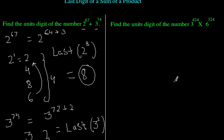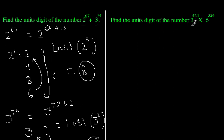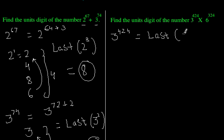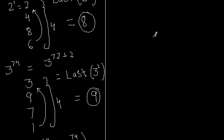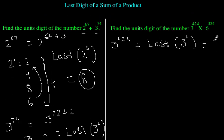Similarly, for the product we simply multiply the units digits. The pattern length for 3 is 4. For 3 raised to power 424, since 424 is divisible by 4, this is equivalent to the last digit of 3 raised to power 4. From the pattern we saw, the last digit of 3^4 is 1.